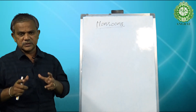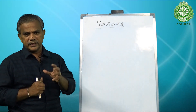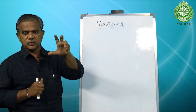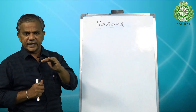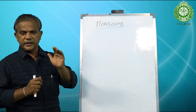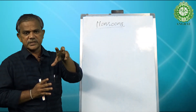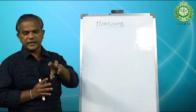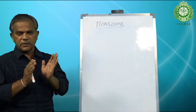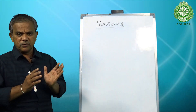Monsoons arise from two reasons. After March 21st, the inclination of the earth is toward its northern part relative to the sun, so the entire landmass of the northern part of the globe — including India, the Indian subcontinent, Tibet, and China — gets heated up. Low pressure develops in the months of April, May, June, and the quantity of low pressure keeps increasing.